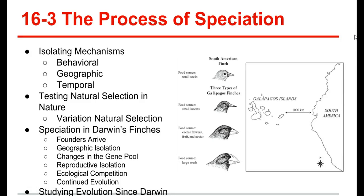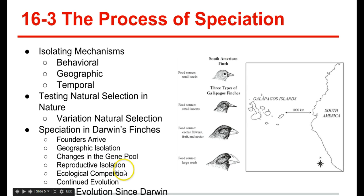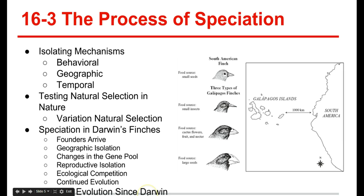Speciation in Darwin's finches occurred through several steps: the founding of a new population, geographical isolation, changes in the new population's gene pool, reproductive isolation, and ecological competition. First, the founders — a few finches from South America — arrived at the Galapagos Islands, nearly a thousand kilometers away. Next, geographic isolation occurred as the species flew to different islands. The populations on each island became adapted to their local environments. Then reproductive isolation developed: because of different beak sizes, birds with different beaks would not breed with each other, tending to breed with similarly beaked birds. More specialized birds had higher fitness. Through continued evolution, the original finches produced over 13 different species.